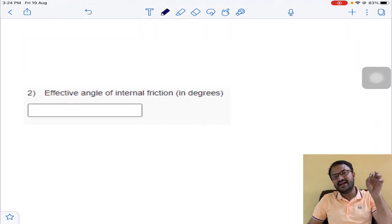We need to calculate effective cohesion in question number 1 and effective angle of internal friction. He has given it is a drained triaxial test. He has asked for effective shear strength parameters. Whatever total shear strength parameters, both effective shear strength parameters, both are one and the same.